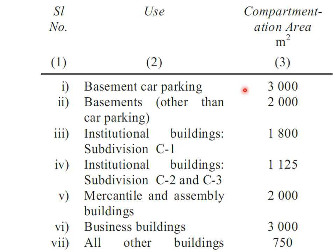The National Building Code of India recommends compartmentation, with all compartments separated by fire separation walls. If the floor plate of a building exceeds 750 square meters, it must be divided into two zones with a fire separation wall. For basement car parking, one compartment area should not exceed 3000 m². For institutional buildings, it is about 1800 m². For all other buildings, one compartment area should not exceed 750 m².